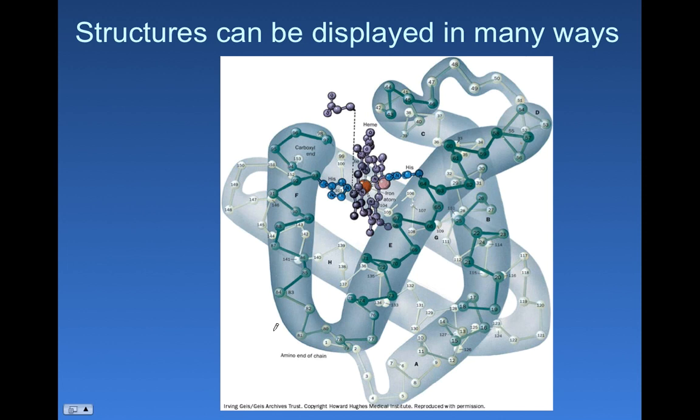Instead of showing you all these bonds that are present in the amino acids, it just numbers the things. And so here's the first amino acid, second, third, fourth, fifth, sixth, so on and so forth, all the way to, what do we got here?